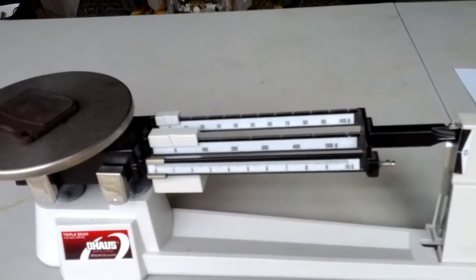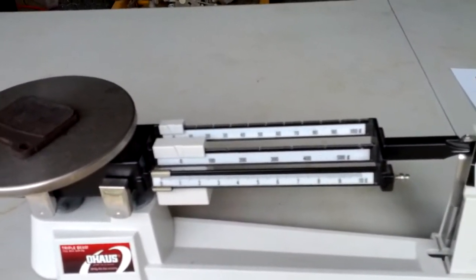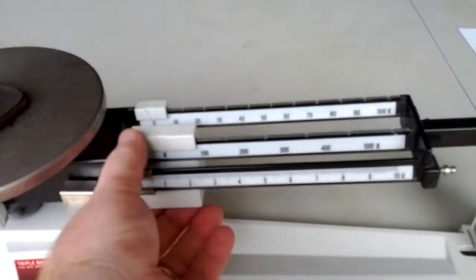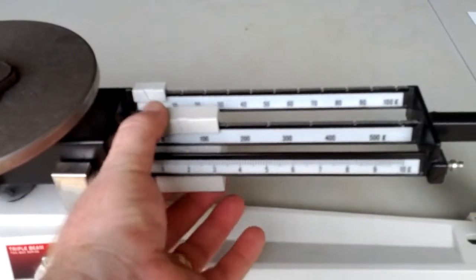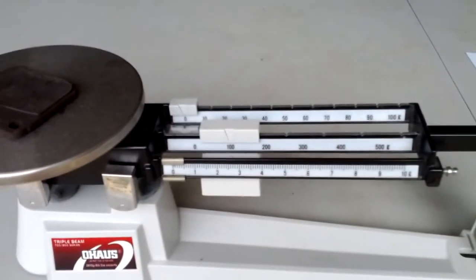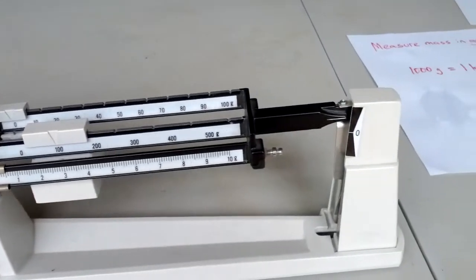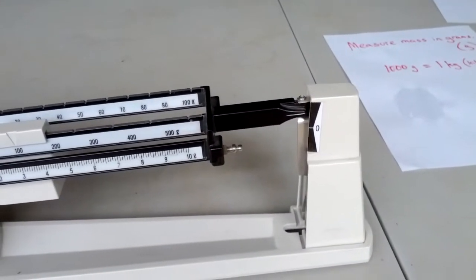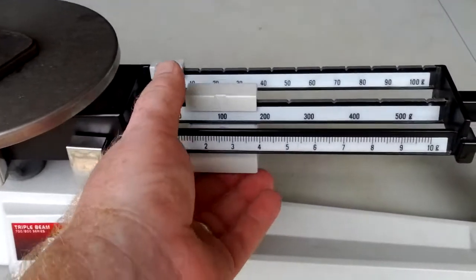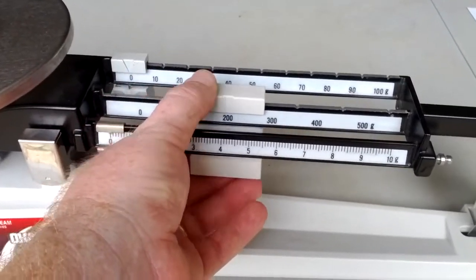Now you start with the hundreds rider. And you slide the hundreds rider one notch at a time. So first, I'm going to slide the hundreds rider over to 100. And when I slide it over to 100, my balance is still all the way at the top of this scale over here. So I need to slide it over one more notch.